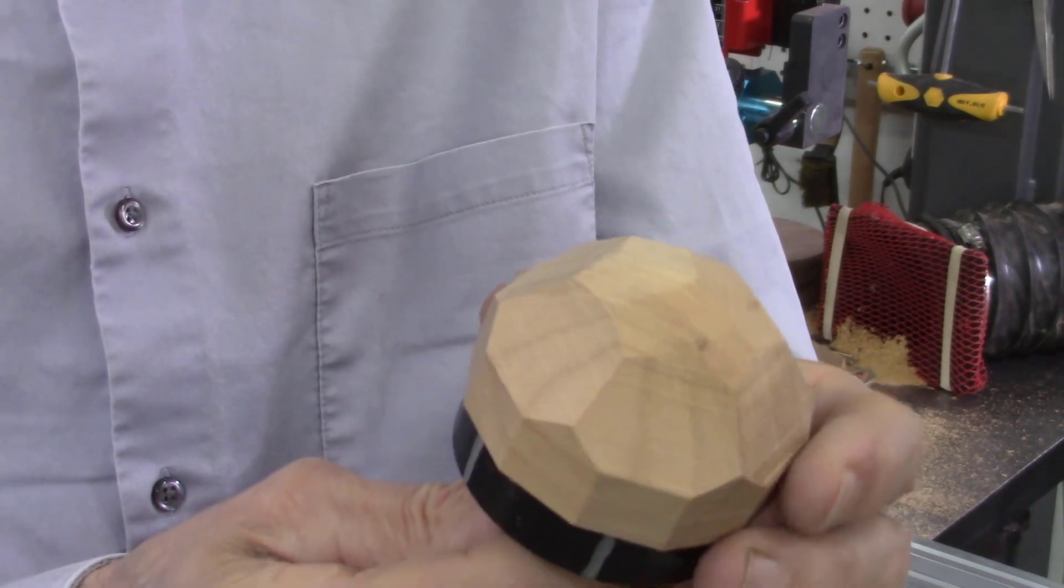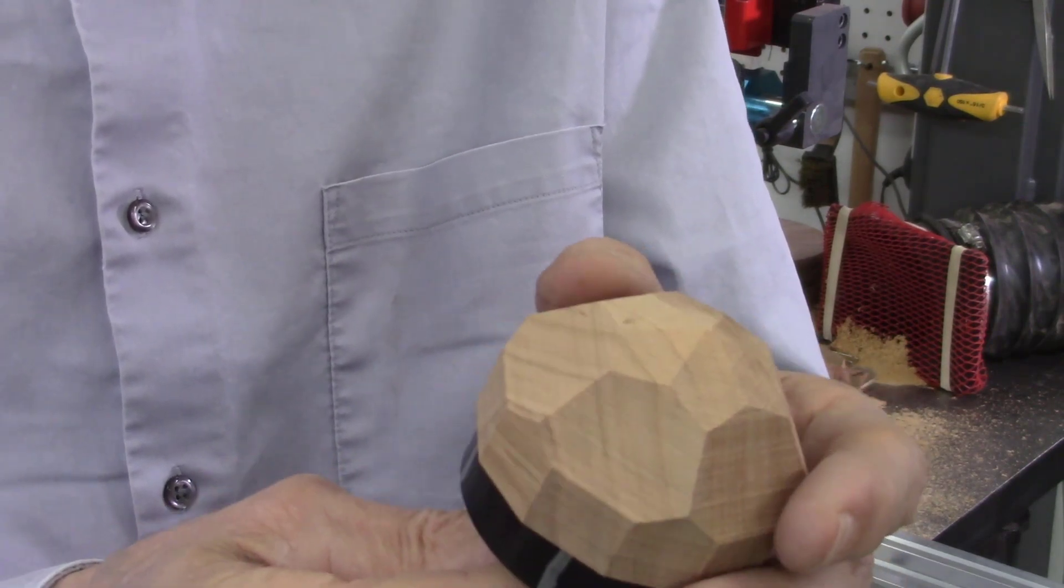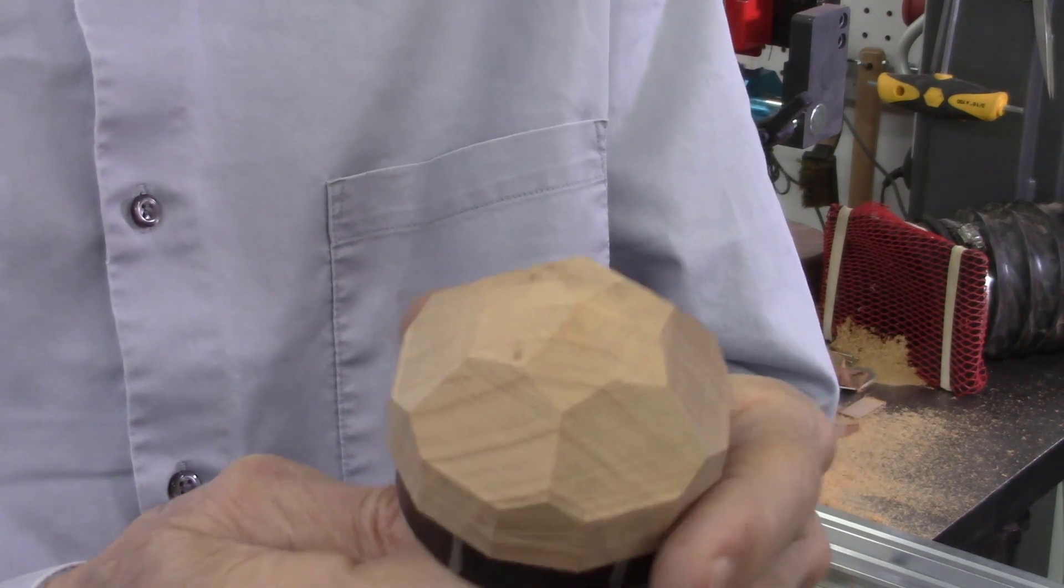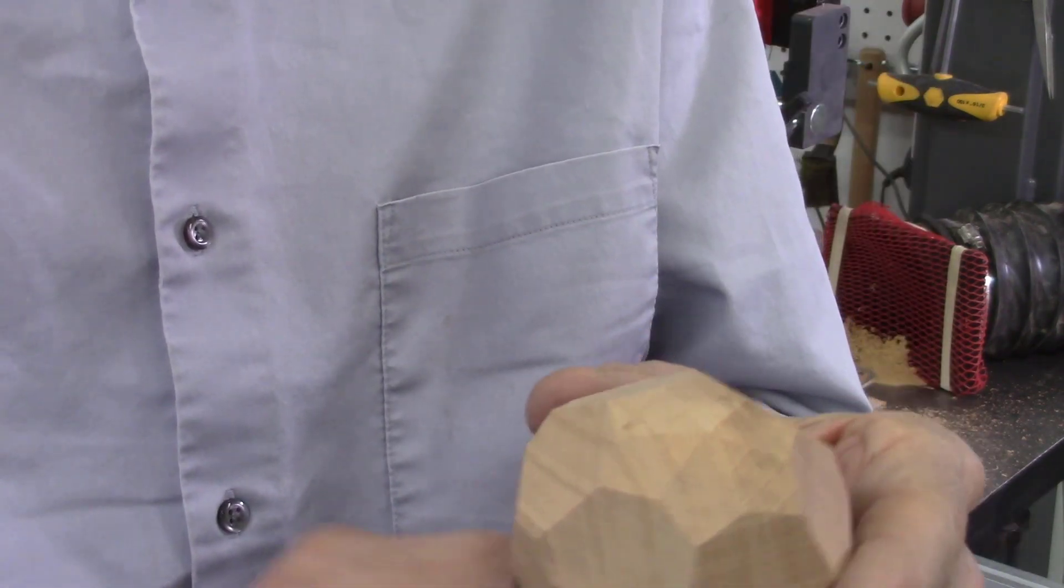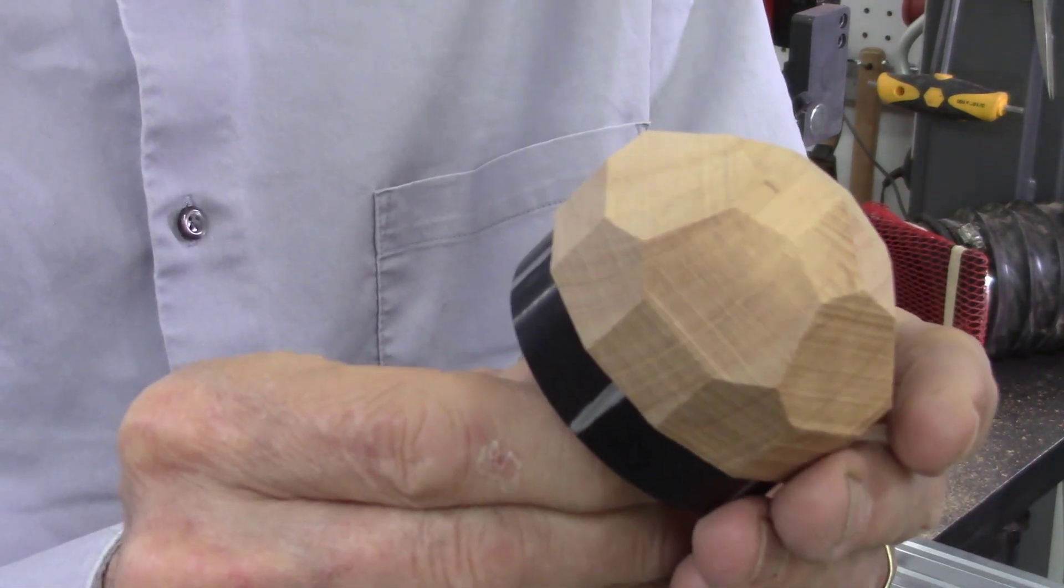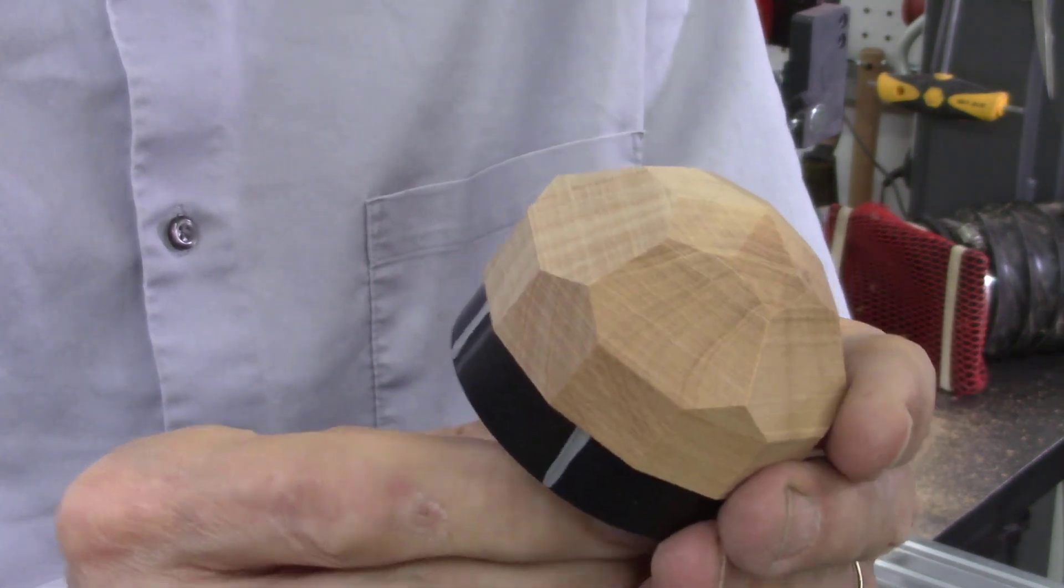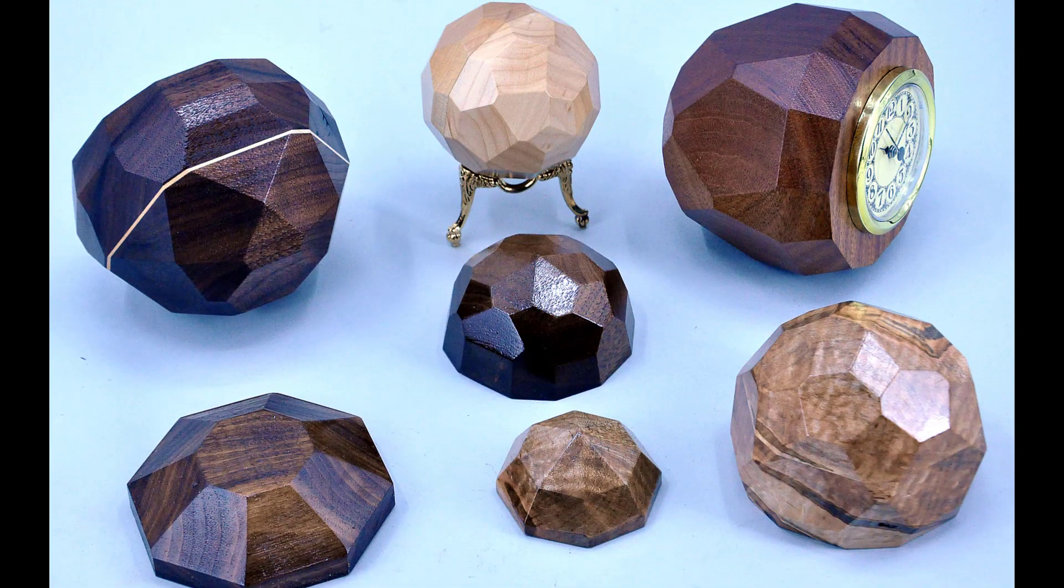There's some additional videos to follow which will describe using this to make some patterns, making some actual projects using this technique. Also additional videos showing how we sand these facets. We made another jig for the disc sander that you can use the same AccuFacet system on the disc sander to sand. Because you see they're fairly rough, you might be able to see the texture on there from the bandsaw blade. You can sand it by hand but it'll take quite a bit of work. It's much easier if you use a fine disc on a disc sander. These are just a few of the projects completed with the AccuFacet system which will be demonstrated in future videos. For additional information on the AccuFacet system including additional videos and pictures of our projects, please visit our website and click on the AccuFacet tab.